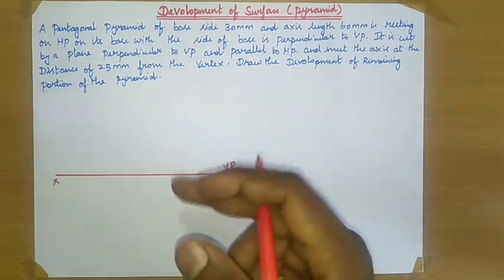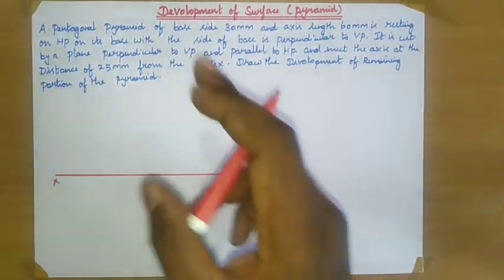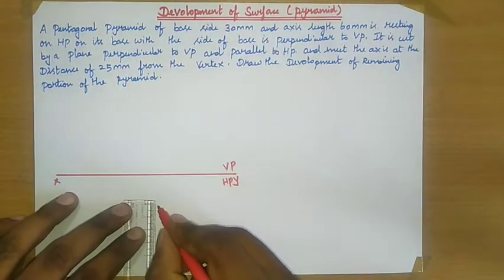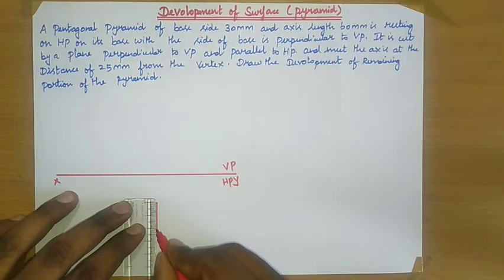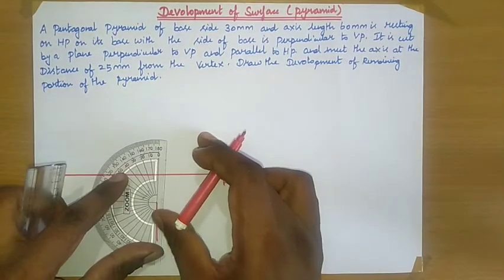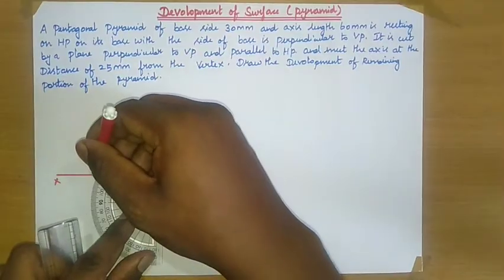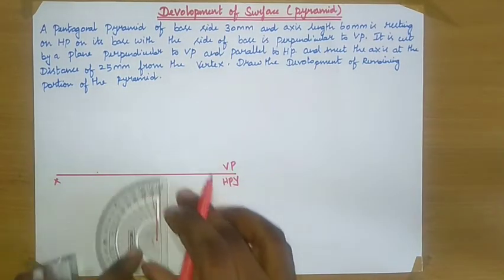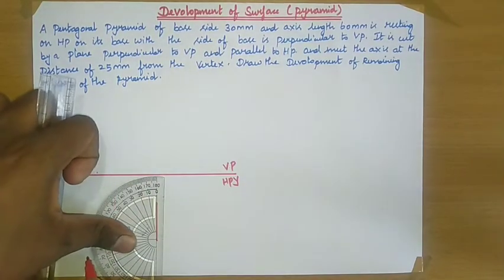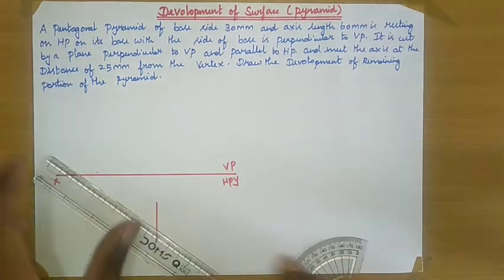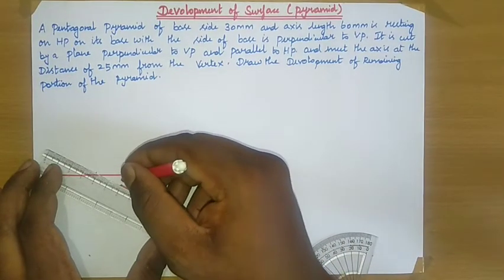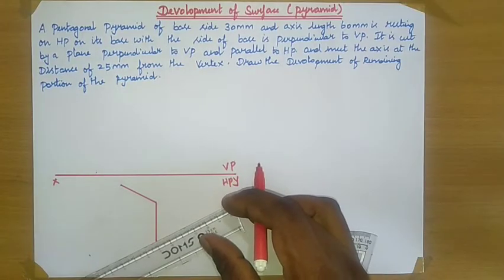Now we are going to draw the top view section. The top view of a pentagonal pyramid is a pentagon shape. Draw a 30 mm line for the base side. Then place your protractor at this point and take 72 degrees, and again take 72 degrees. Draw a 30 mm base side from this point, and again draw a 30 mm base side from this point.